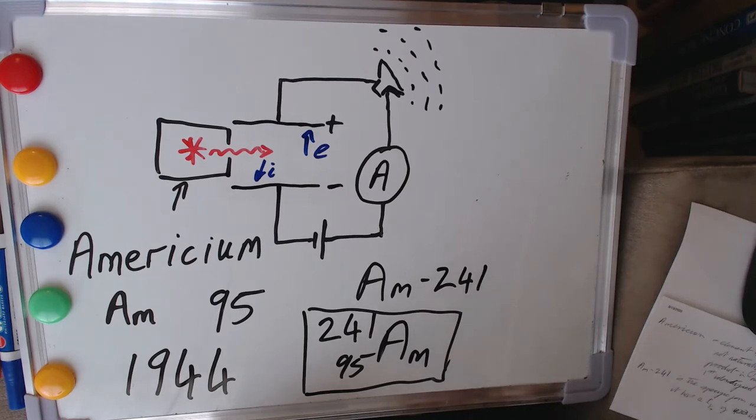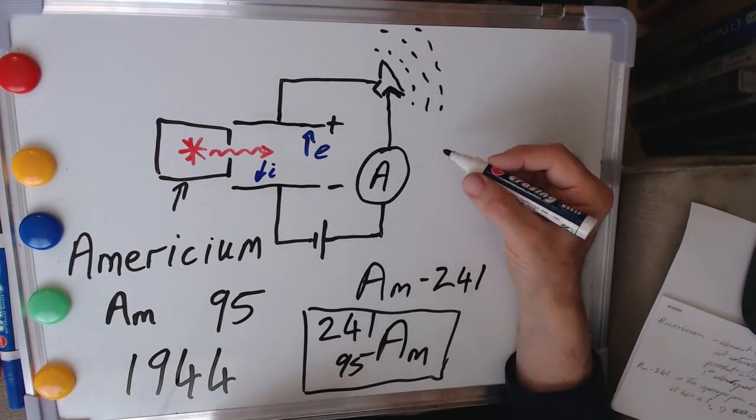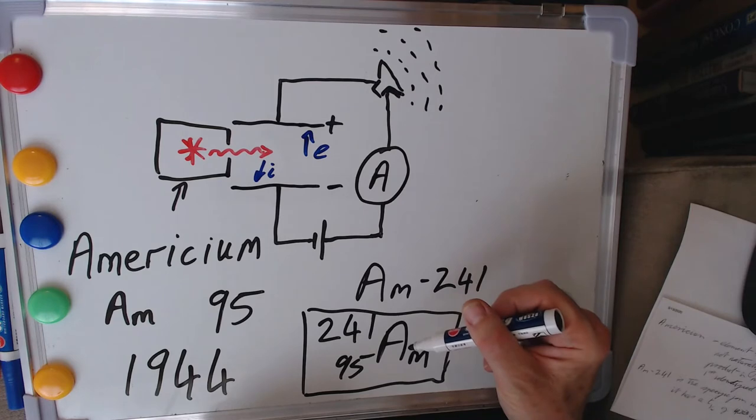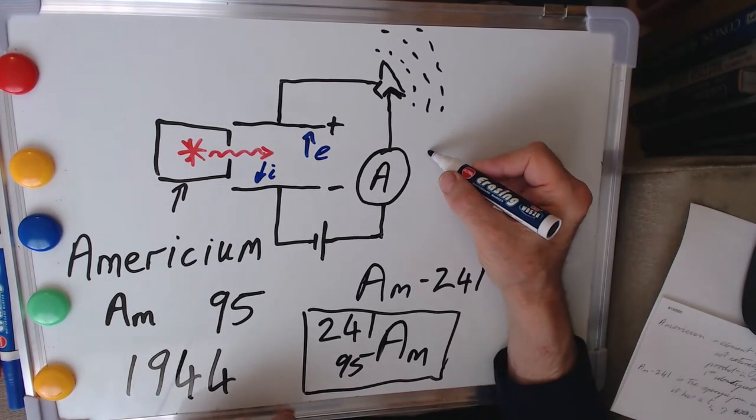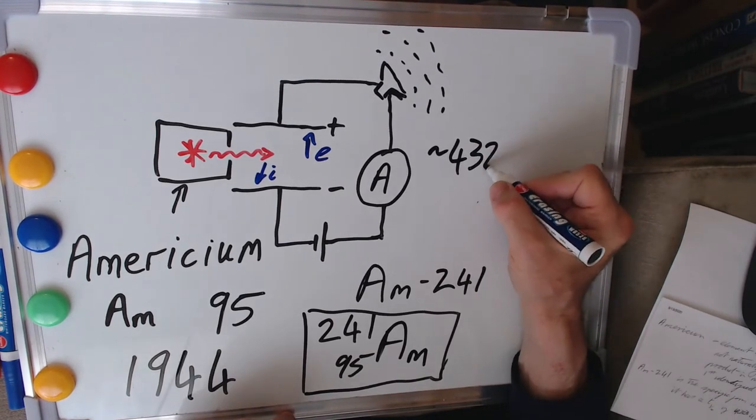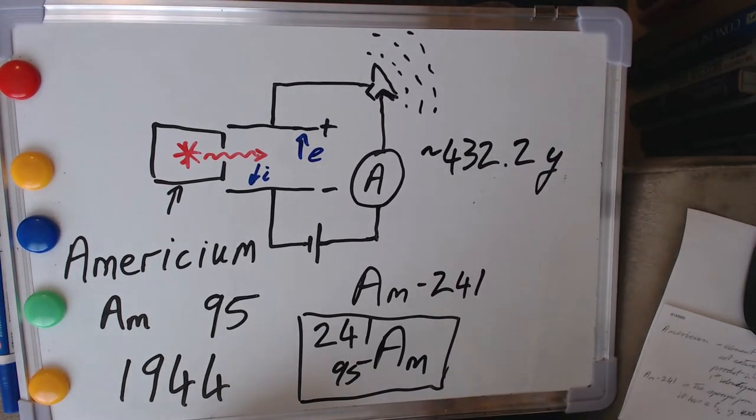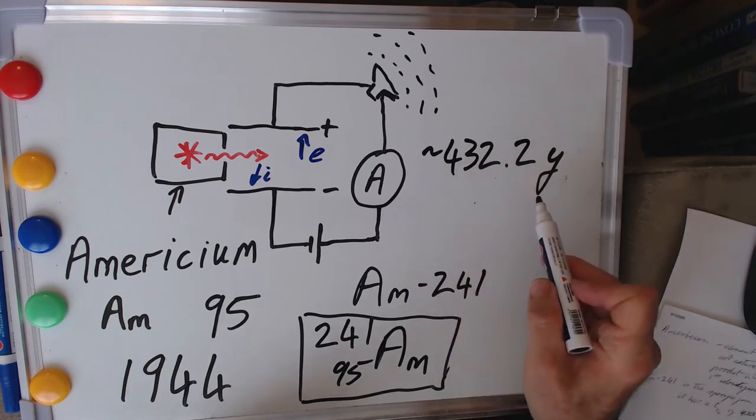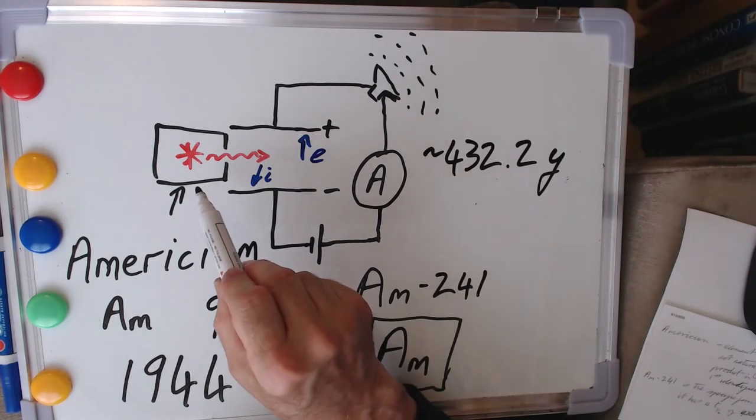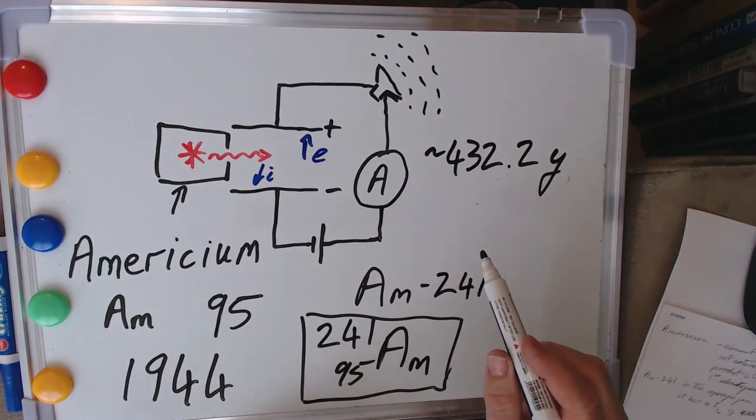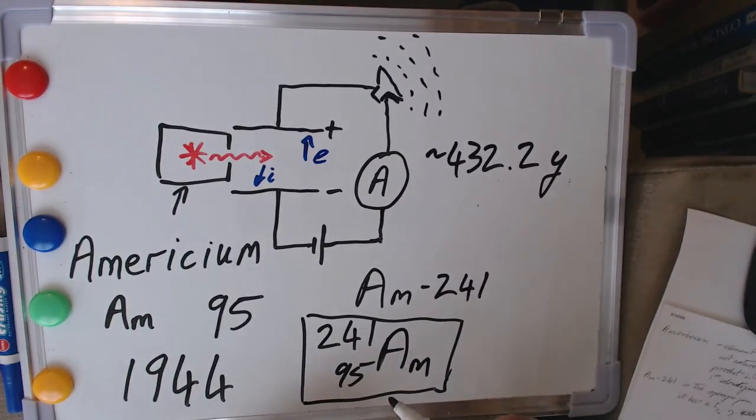Now, americium-241 has a half-life—that's the time it takes for half of these radioactive isotopes to decay—it has a half-life of about 432 years. It's actually 432.2 years. So actually, this lasts a long time. What's going to bring your smoke detector to the end of its life is not the radioactive source. It'll be other bits and pieces that fail in there way before you have a problem with your radioactive source.